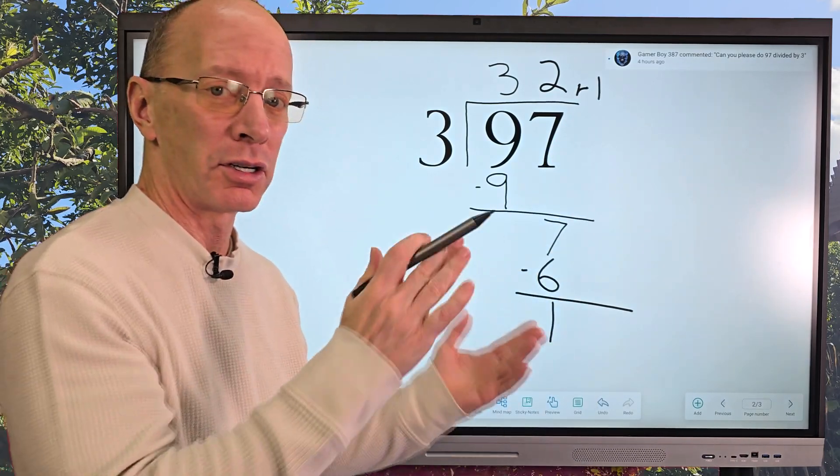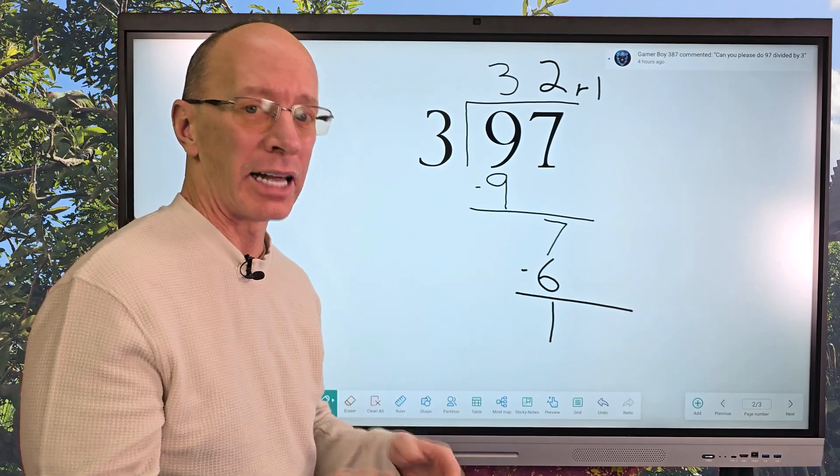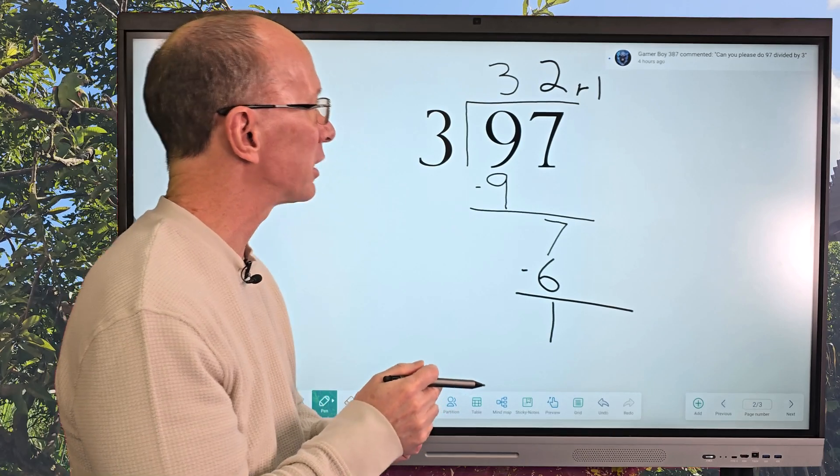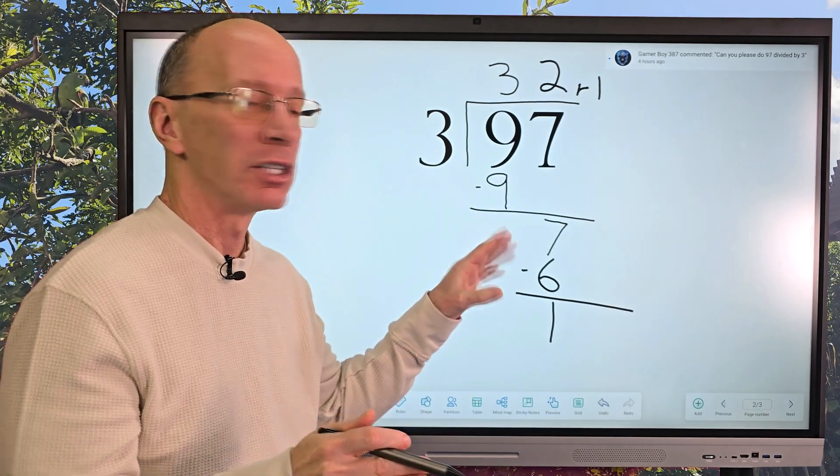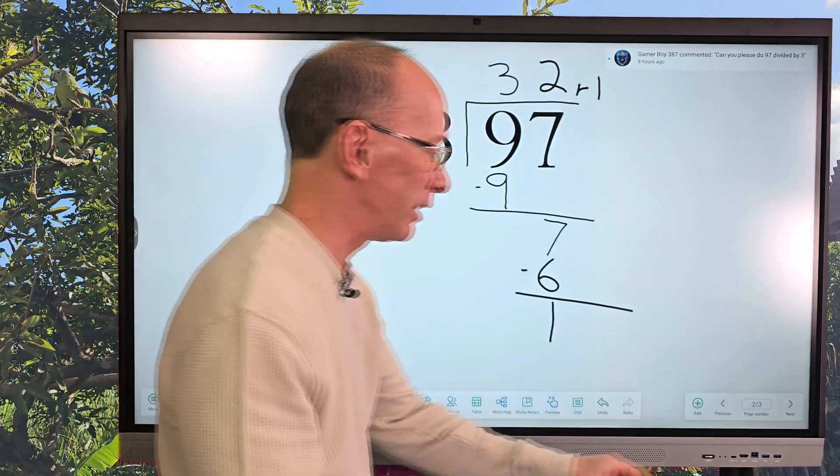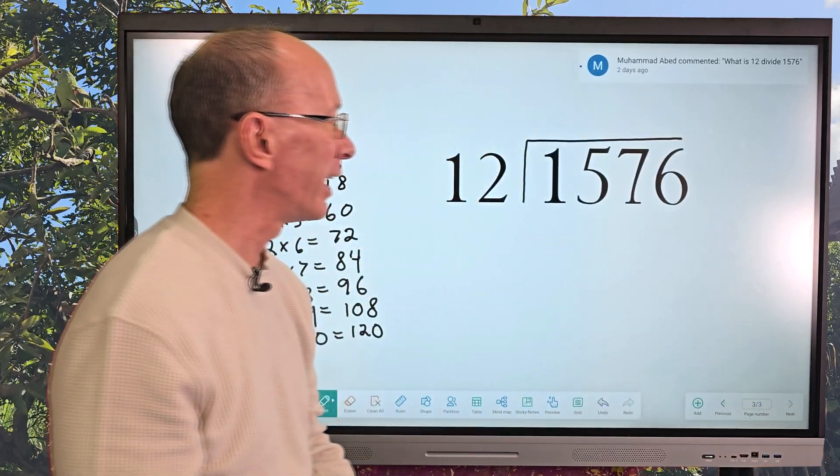Now sometimes you might want to turn this into a decimal point. And I do have videos on that. So check that out. But for right now, I'm just going to leave it as a remainder. So our answer is 32, remainder 1. Ready to do the big problem? Yeah, let's do it.